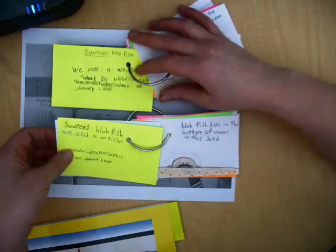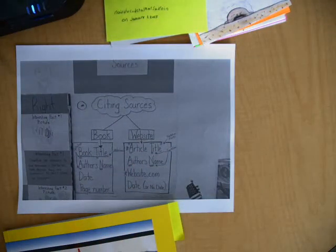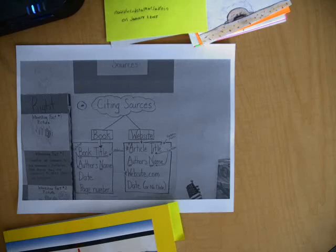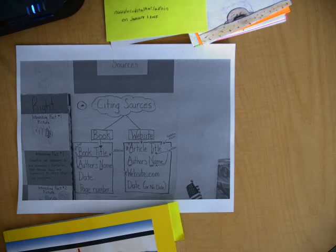Unfortunately, we couldn't find blobfish in any of our books, so we have to keep looking for that. But I did put book sources up here for you. Remember, if you were to take that flip book and open it right up, there's your cover, and you've always got a source on this side for where you got this piece of information. If you take it here and match it, you've got the source to the picture. This gives you some really great examples of how to write your sources out.